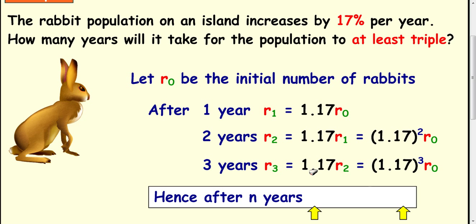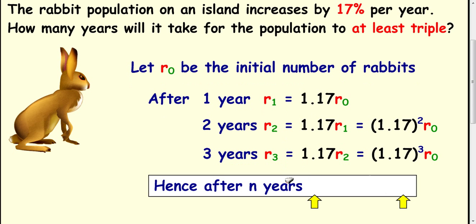Now this generates a formula and you should see a pattern happening here. After two years it's 1.17 squared times R0. After three years it's 1.17 cubed times R0. So after any number of years you take the 1.17 and put it to the power of n times R0.